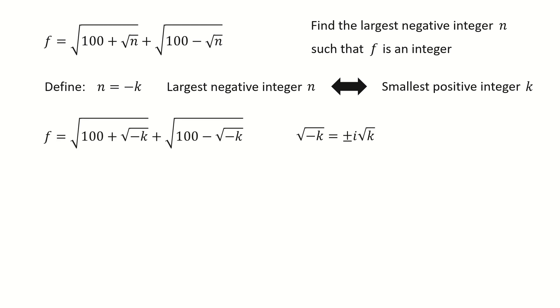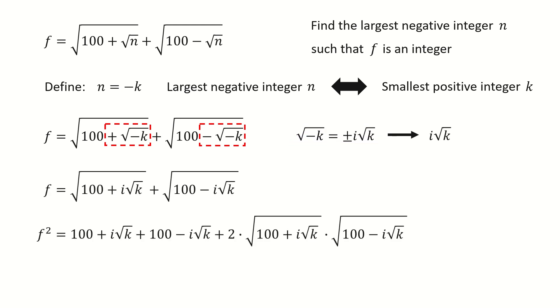We can write this expression into this way. For this square root term, because we have the symmetry here, it doesn't matter if you choose the plus sign or minus sign. Without losing any generalities, we choose the plus sign here. We plug in, and next we square them on both sides.